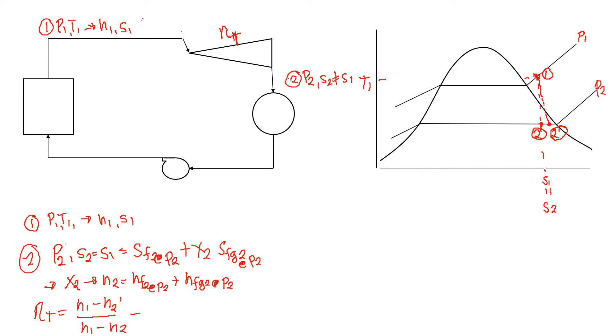So therefore, given the turbine efficiency, we have H2 prime equal to, transpose that, we have H1 minus turbine efficiency times H1 minus H2. Just like that.